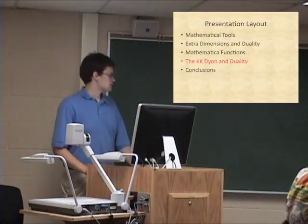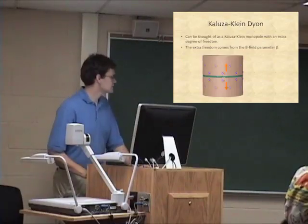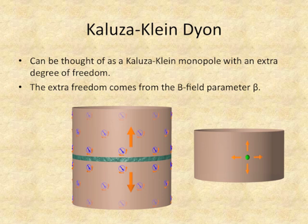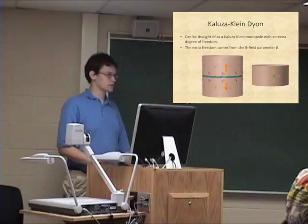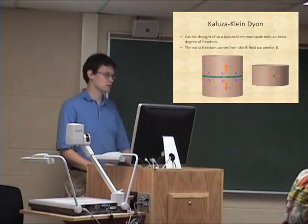What I ended up doing with these functions was analyzing another specific string theory object called the Kaluza-Klein dion. As you can see, it looks fairly similar to the monopole, but there are also these arrows indicating an additional degree of freedom that this dion has. That extra freedom comes from something in the B field called beta. Beta is basically controlling the angle of those blue arrows, which we can think of as a direction around a circle. And the NS5 brane moves around a circle — that's where we lost our extra degree of freedom before. T-dual objects must have the same physics, so missing that degree of freedom from the monopole is a problem. This provides one way we might be able to fix that.